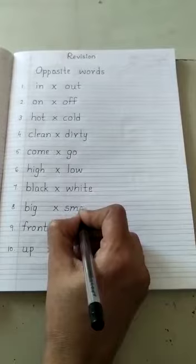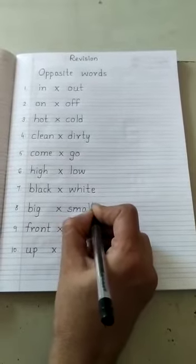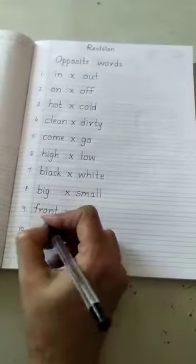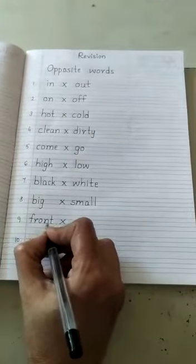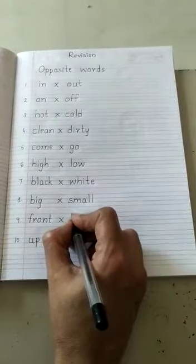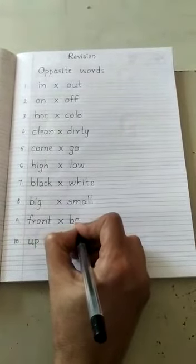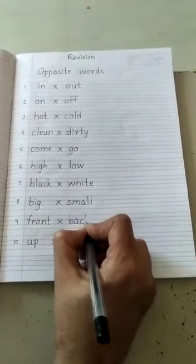S M A L L. Ninth one is Front. F R O N T. Front. Opposite word for front is Back. B A C K.